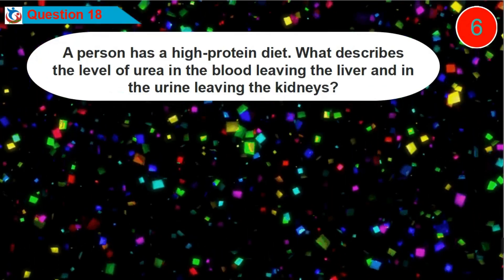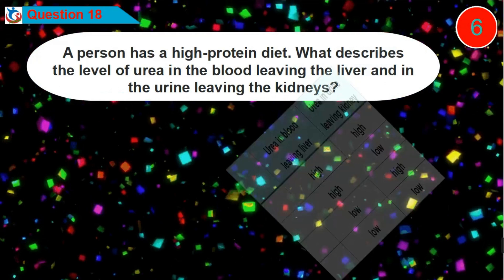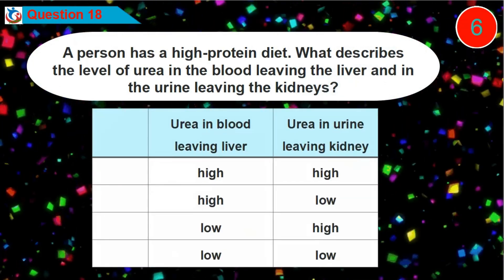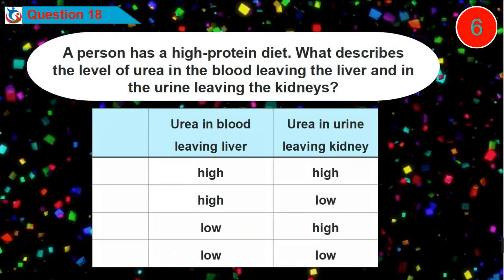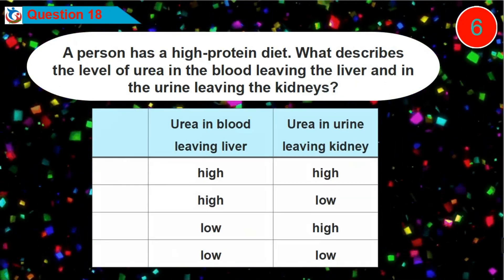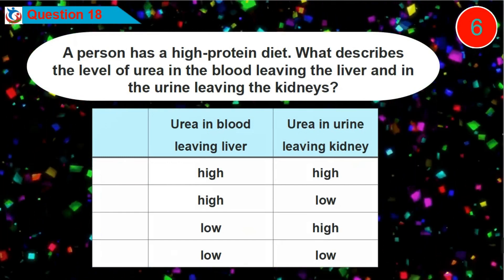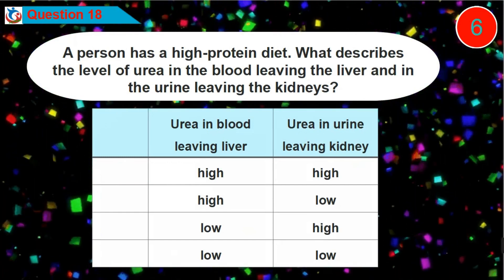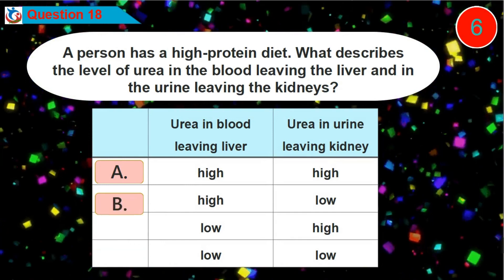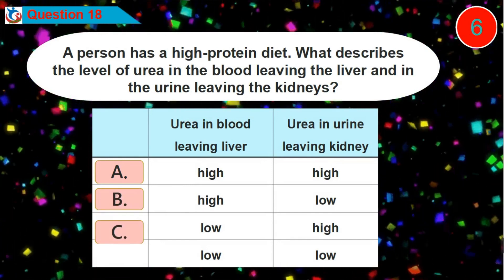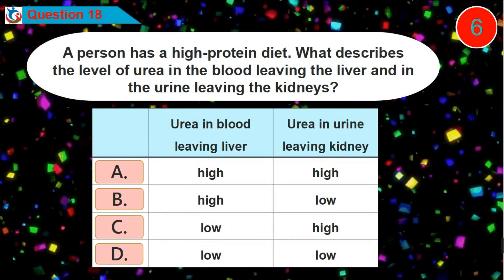Question 18. A person has a high protein diet. What describes the level of urea in the blood leaving the liver and in the urine leaving the kidneys? Is it option A, B, C, or D?